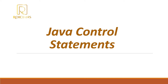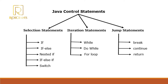Let's understand what the different Java control statements are. Java control statements are divided into three categories: selection statements, also known as decision-making statements; iteration statements, also known as looping statements; and jump statements, also known as branching statements.